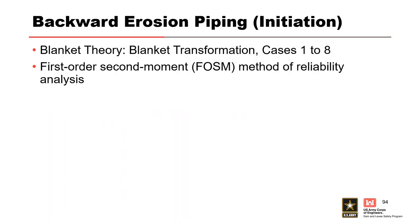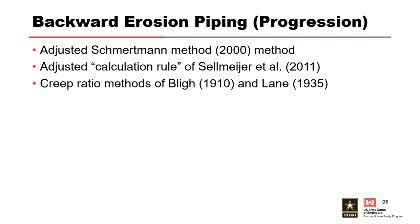The RMC backward erosion piping initiation toolbox contains two methodologies: cases one through eight of blanket theory, and the first-order second-moment method of reliability analysis. The RMC BEP progression toolbox contains three methods: the adjusted Schmertmann method incorporating Robinson and Sharp 2016 as a probabilistic method; the Dutch calculation rule with fine tuning from Sellmeyer and others in 2011 and modifications by Van Beek and others for multilayer foundations and reduction in gradient for three-dimensional configurations; and creep ratio methods including Bligh from 1910 and Lane from 1935. Primary references for the Schmertmann and Sellmeyer methodologies are listed, with additional references in the technical manual and toolbox.